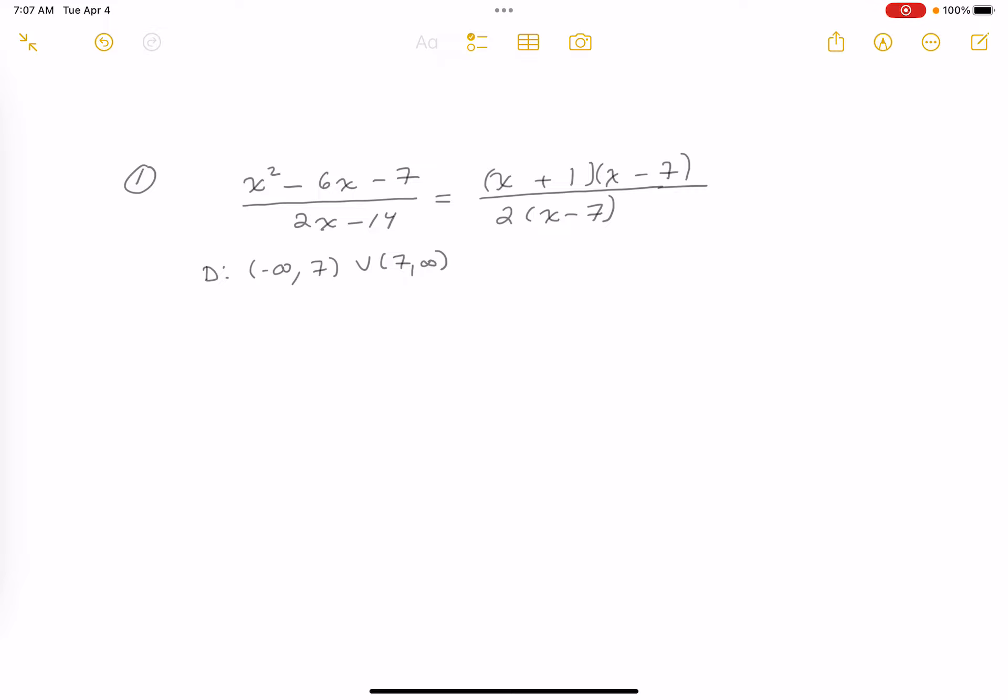Let's put the reduced problem down now. The reduced problem over here is going to be x plus 1 over, x minus 7 cancels off, over 2. This is your final answer.